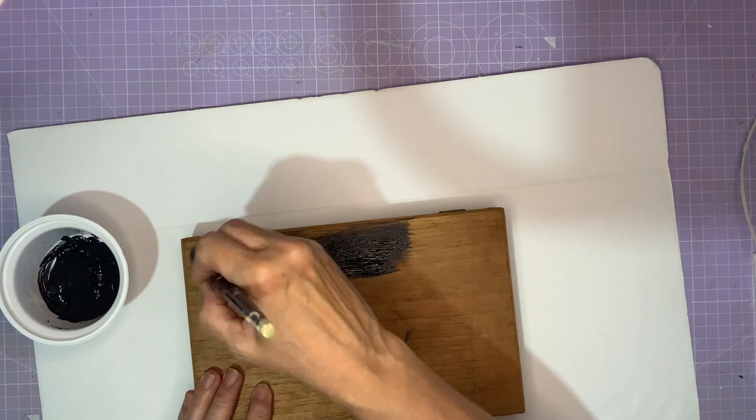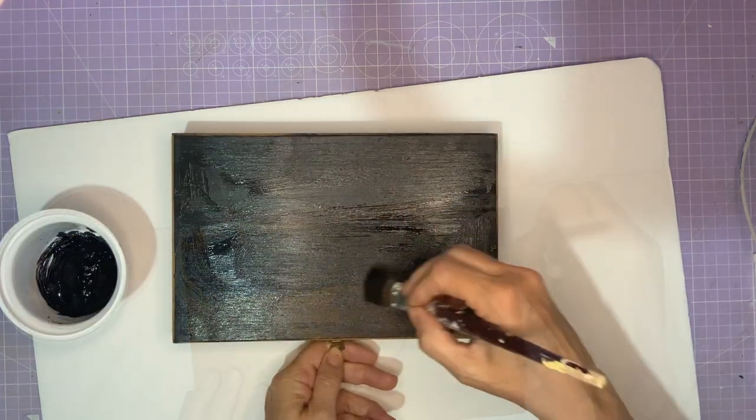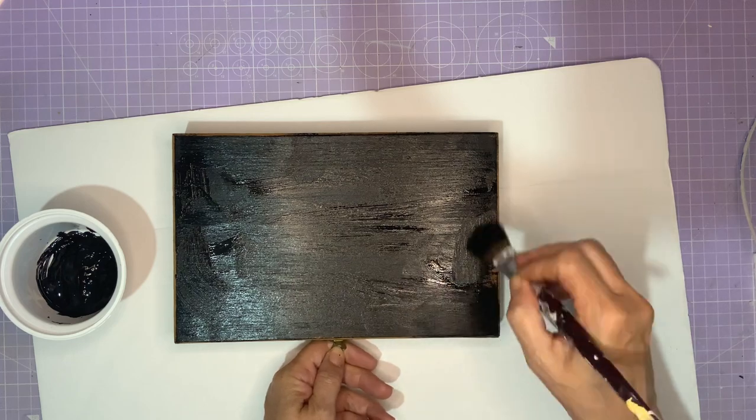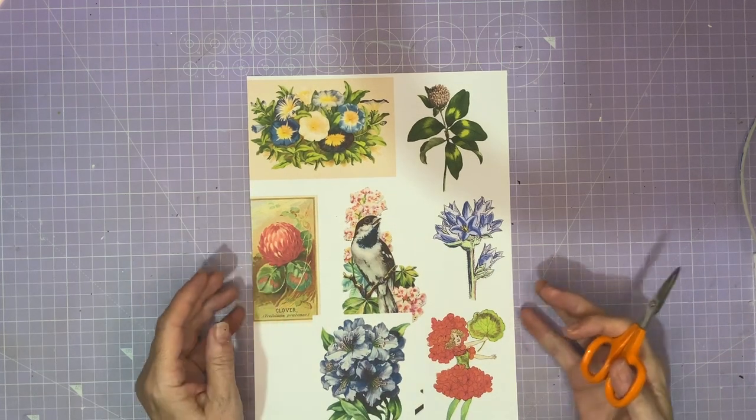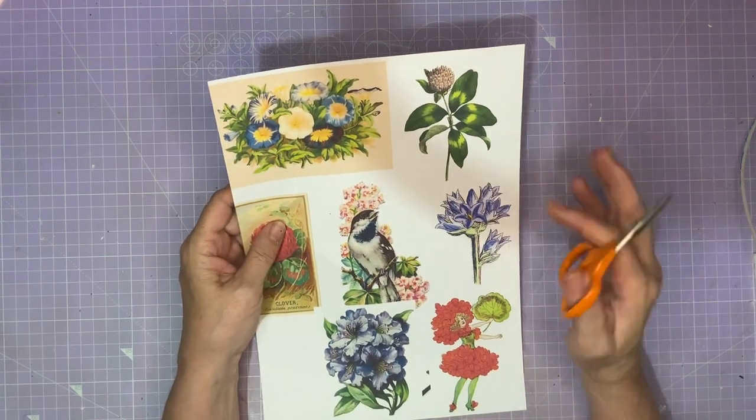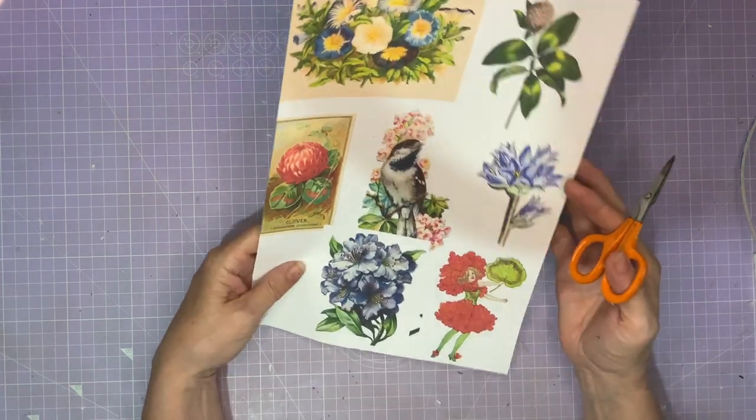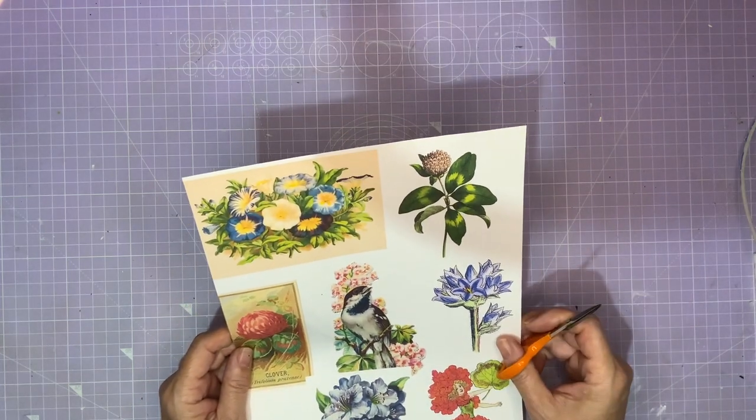The Victorians often decoupaged on top of black paint, so that's what I'm going to do. I've got this acrylic paint in lamp black and I'm just going to cover over the whole of this box. While that is drying, I've printed some decoupage images from the Graphics Fairy.